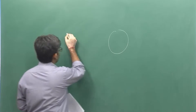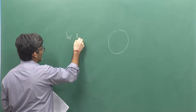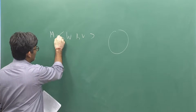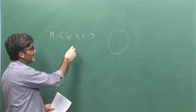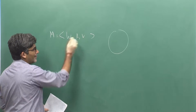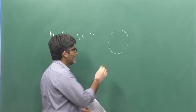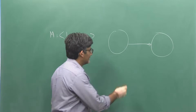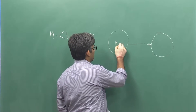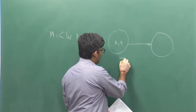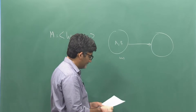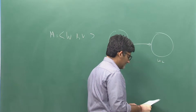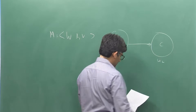A Kripke model consists of a set of possible worlds W which has to be non-empty, R is an accessibility relation, and V is a valuation function. Here is a relational structure where A and B are true in world W1, and in the case of W2, C is true.